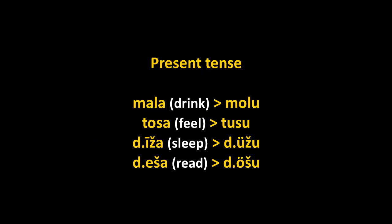So malan means 'to drink.' Notice that the final A letter of the infinitive form is automatically nasal in Chechen — mala is spelled mala but pronounced malan. In the present tense it becomes molu. Tossa 'to feel' becomes tusu. Dija 'to sleep' becomes duju. Deesha 'to read' also becomes duju.